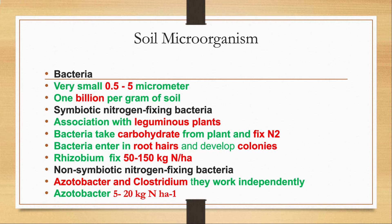Non-symbiotic nitrogen-fixing bacteria fix nitrogen in the rhizosphere but do not need plant roots. They fix elemental nitrogen into plant-available form. Examples are Azotobacter and Clostridium. Azotobacter works in the presence of oxygen, while Clostridium is an anaerobic bacterium that can work without oxygen. These bacteria depend on organic matter in soil and require higher amounts of carbon. Azotobacter fixes 5 to 20 kg nitrogen per hectare.